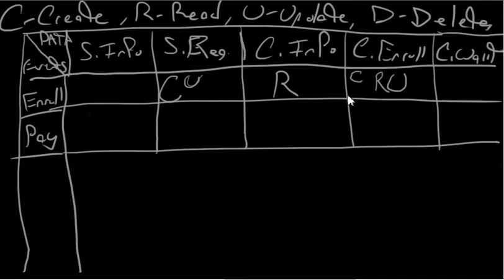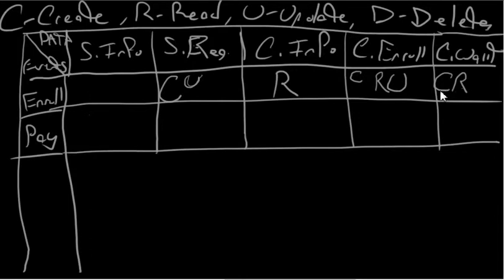If there is no room in the course for the student, the system then checks to see if there is room in the course's waiting list. If there is room in the list, then the student is placed on the waiting list and informed. If there is no room in the course or on the waiting list, the system informs the student.